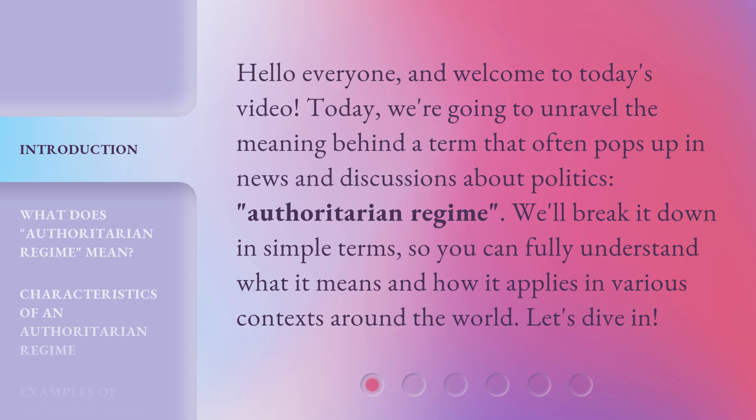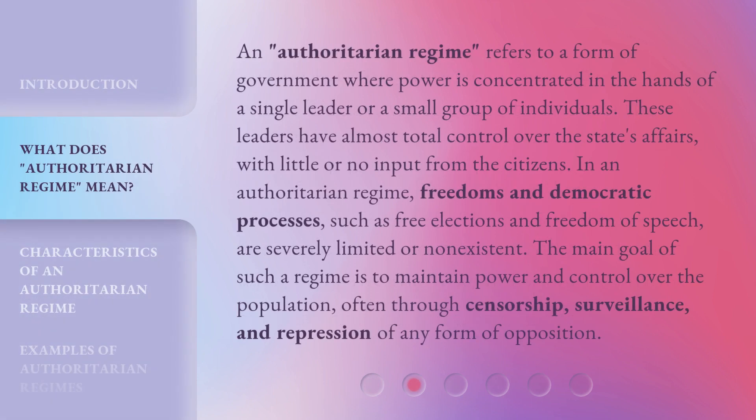We'll break it down in simple terms, so you can fully understand what it means and how it applies in various contexts around the world. Let's dive in. An authoritarian regime refers to a form of government where power is concentrated in the hands of a single leader or a small group of individuals. These leaders have almost total control over the state's affairs, with little or no input from the citizens.